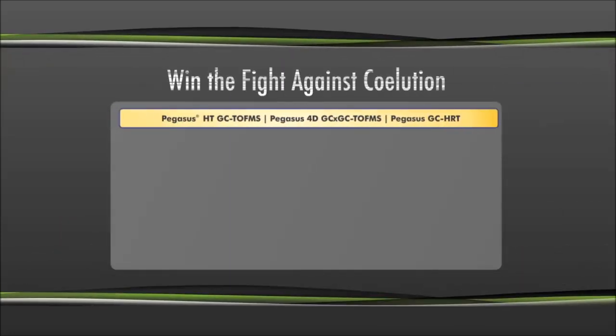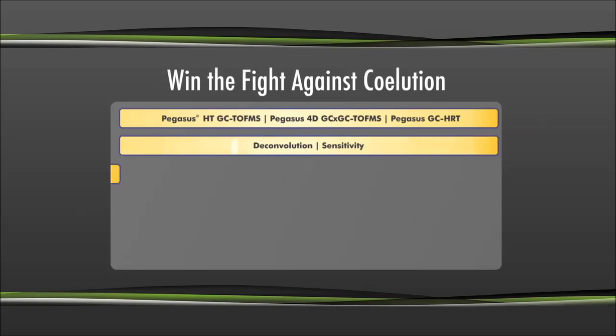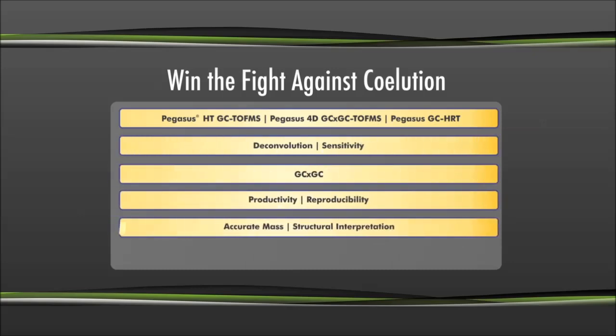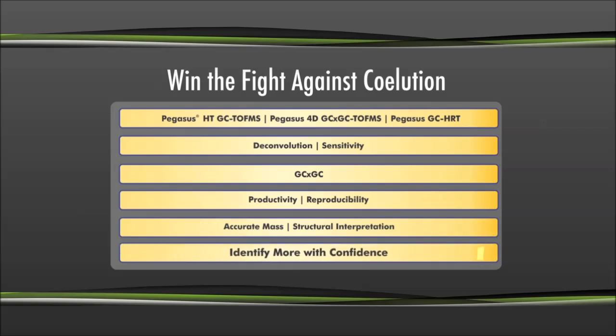LeCo products win the fight against coelution by combining features like deconvolution, sensitivity, GC by GC, reproducibility, accurate mass, and structural interpretation to identify more analytes with confidence.